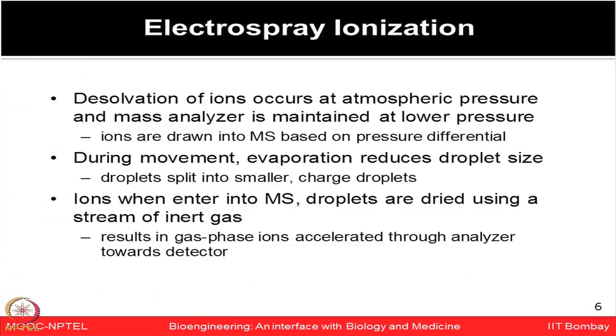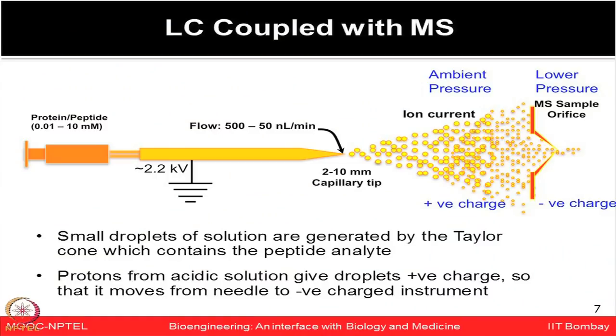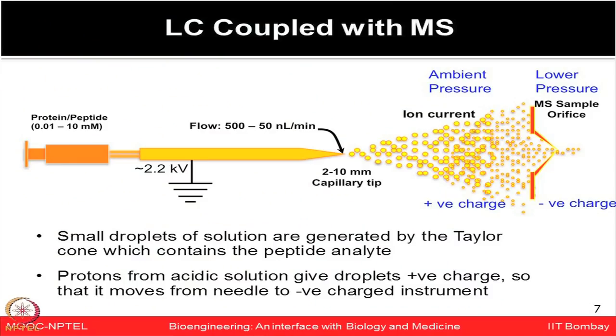By using this differential pressure, all ions are moved inside the mass analyzers. During this movement, evaporation reduces the droplet size, generating charged droplets. These ions entering the mass analyzer result in gas-phase ions accelerated towards the detector. The small droplets from solution form what is known as the Taylor cone, which contains the peptide analytes. Protons from the acidic solution provide positive charge, moving the ions toward the negatively charged instrument and into the mass analyzer.